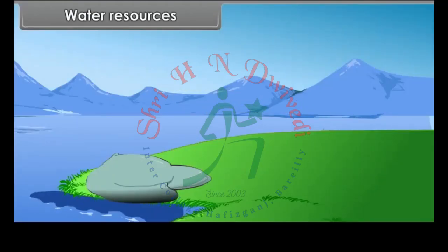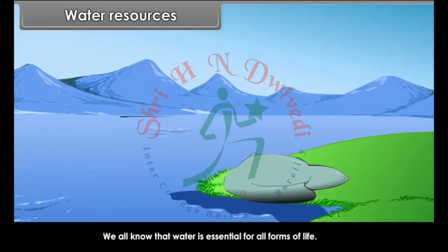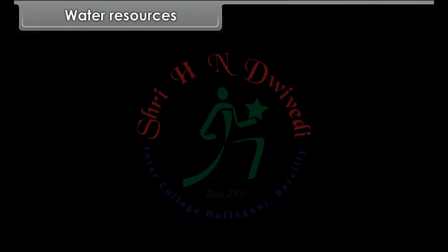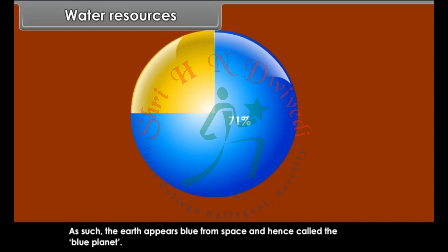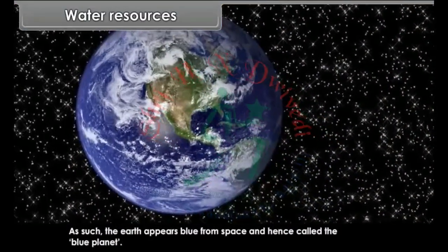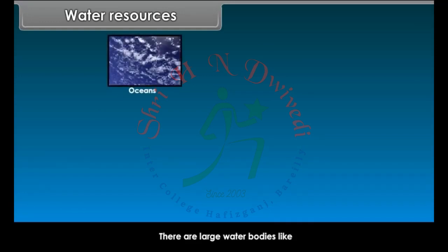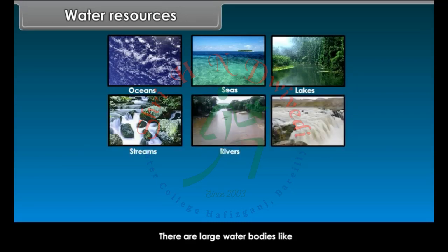Water Resources. We all know that water is essential for all forms of life. Do you know why earth is called the blue planet? About three-fourths (71%) of the earth's surface is covered with water. As such, the earth appears blue from space and hence is called the blue planet. The different sources of water include large water bodies like oceans, seas, lakes, streams, rivers, freshwater and groundwater.